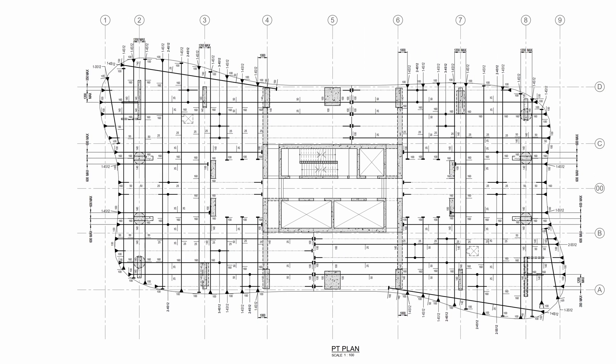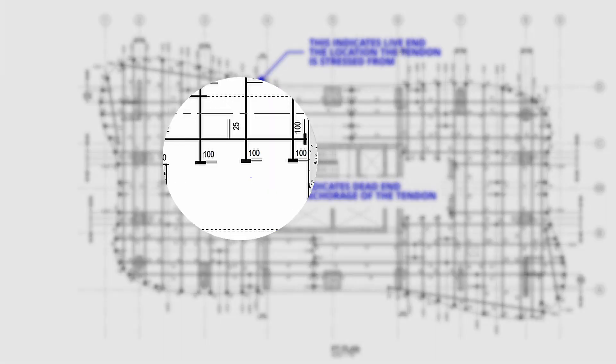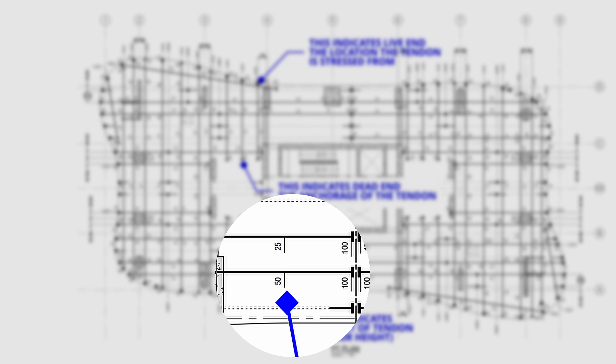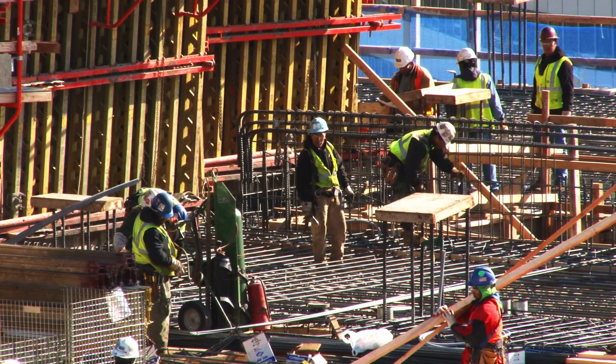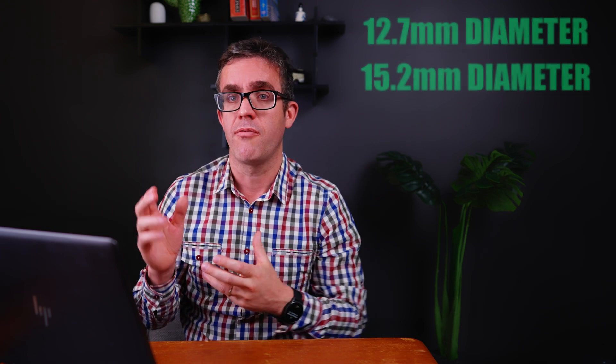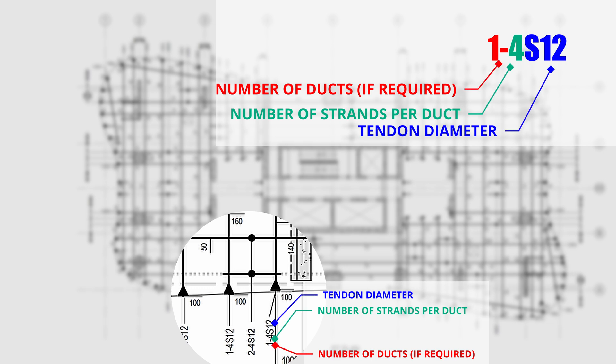Moving to the post-tension plan: when constructing a post-tensioned slab, the sequence is bottom reinforcement, post-tensioning, then top reinforcement — the post-tensioning is sandwiched between the bottom and top mats. On the post-tension plan you need to show all tendons, or extent lines with centers. For each tendon you must show the live end where it's stressed from, the dead end where it terminates, and the chair heights — showing high points and low points of the cables. A construction joint may also be documented where the slab can't be poured in one go. You also need to call up tendon size — typically 12.7mm or 15.2mm — and the number of cables in each tendon, which may be three, four, or five cables.